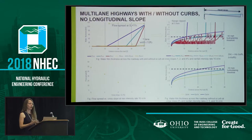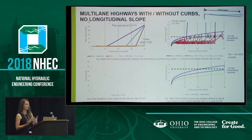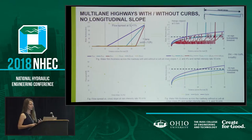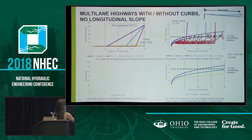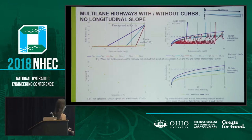You can see different plots of a cross section through the water film and through the water thickness that is greater than a few millimeters. On the left side you will see a comparison of those thicknesses for a case with and without curves and without any longitudinal slope. This is a more general view where you can see the flow spread and the pooling areas, which differ for different cross-sectional slopes. You can see 1%, 2%, and 4% cross-sectional slopes with and without curves — the C means with a curve.